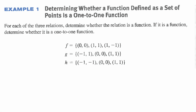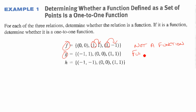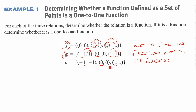Let's see if these three relations are functions and if they are, whether they're one-to-one. The first one, f, is not a function because an x value of one maps to two different y values — one maps to both 1 and negative 1. For g, it is a function since there are no repeats in x values, but it is not one-to-one because negative one and one both map to one. That makes h a one-to-one function — there are no repeats in the x values and no repeats in the y values.